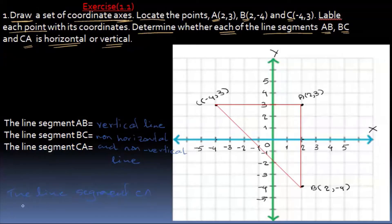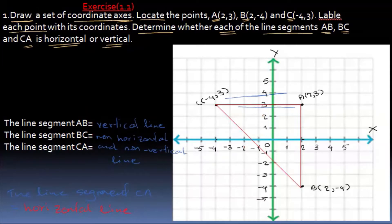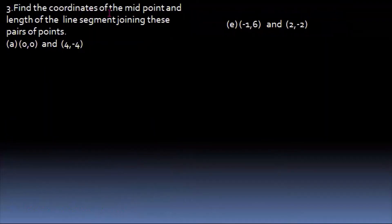Now we will see the line segment CA. CA is equal to the line. CA is equal to x. So if you have a horizontal and non-vertical line, horizontal and vertical line. Find the coordinates of the midpoint. The midpoint is fine.